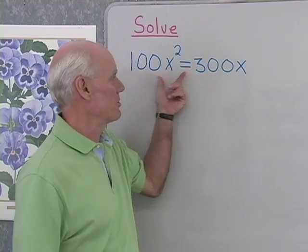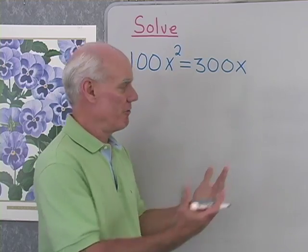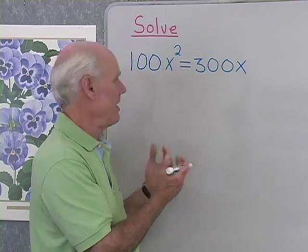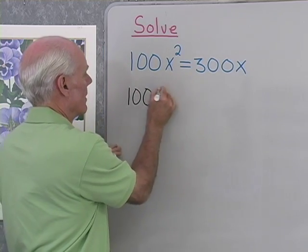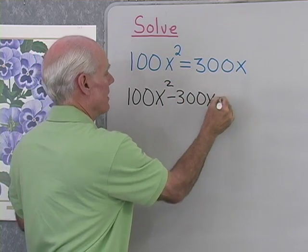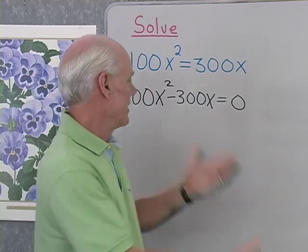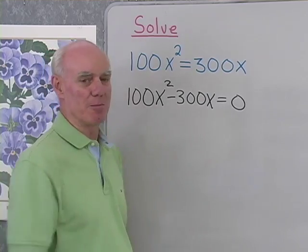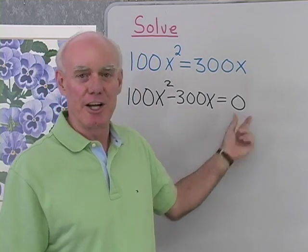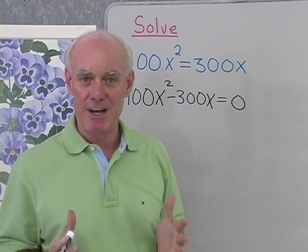If we're going to solve a quadratic equation by factoring, we have to first put it in standard form, then factor. Here I have 100x squared equals 300x. It's quadratic because we have x to the second power. I'll put this in standard form by getting all variable terms on one side: 100x squared minus 300x equals 0. I use the addition property of equality to add negative 300x to both sides, giving me decreasing powers of the variable on one side and 0 on the other — that's standard form.